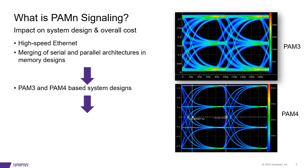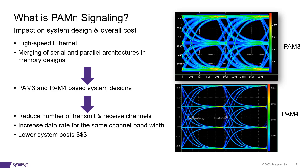Through multi-level signaling, designers can reduce the number of transmit and receive channels and can potentially double the data rate for the same channel bandwidth. Not just that, by reducing the number of required transceivers, cables, or connectors, designers can bring down the cost of their overall system.